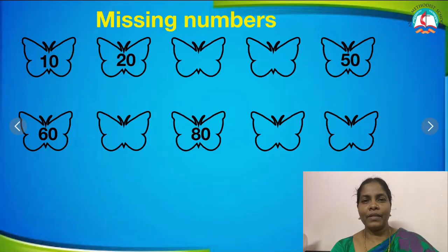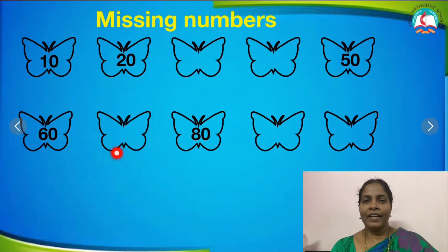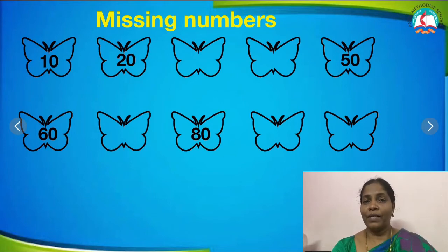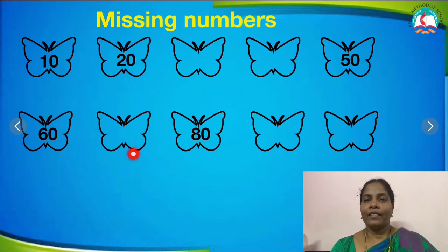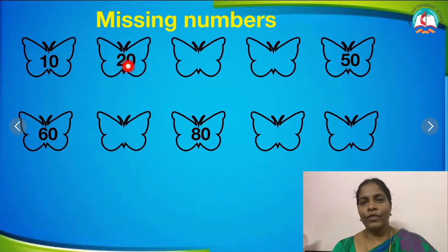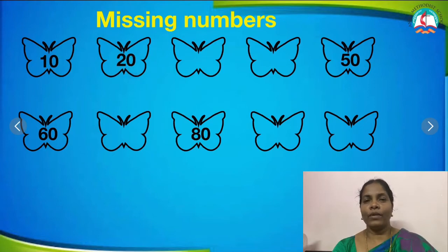Shall we do the missing numbers? What is this, children? Butterflies! We can see some butterflies have numbers and some butterflies don't have numbers. We have to fill those in. What number is this? 10. 1 and 0 is 10. Next one, 2 and 0. After 20 is 30. We have to write 30 here — 3 and 0.